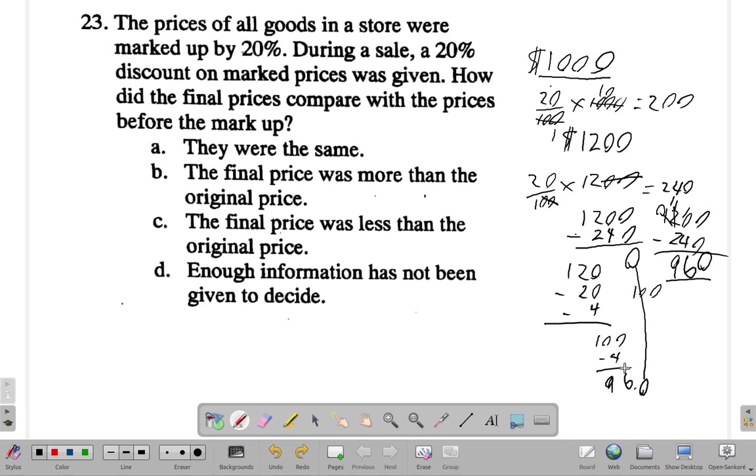Nine hundred and sixty is the final price compared to the original price. It is less than the original price, because when you added 20 percent to the original price, you added 20 percent of a smaller number. Then later on you're taking off 20 percent of a bigger number, so you're taking a bigger one off. So the final price would drop below the original price. The answer for 23 is C: the final price would be less.